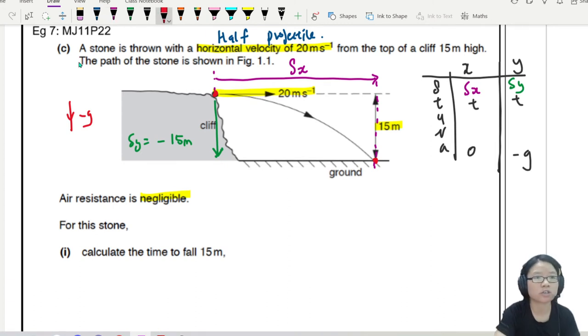The two red dots is the initial and the final. Now, the 20 meter per second horizontal velocity is here. Is there any vertical initial velocity? No. Is there any vertical final? Maybe, I don't know. But currently, there is empty.